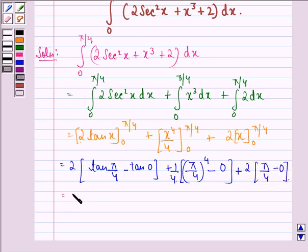This is equal to, now tan pi by 4 is 1, so 2 into 1 minus tan 0 is 0, plus 1 by 4 into pi raised to power 4 divided by 256.